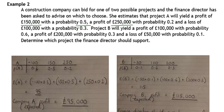So for project A, our probability distribution table gives us possible values minus 100, 150 and 250 and associated probabilities 0.3, 0.5 and 0.2.